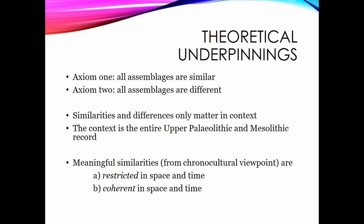The theoretical underpinnings I use are: number one, all assemblages are similar; number two, all assemblages are different. I'm not just trying to be funny — if you compare any two upper Paleolithic assemblages you can find both similarities and differences. If you're interested in finding structure and patterning in the record, you need context for what those similarities and differences mean. For me, if you're studying the European upper Paleolithic and Mesolithic, you need to consider the entirety of that record as your context.